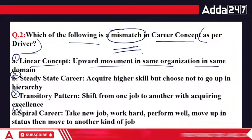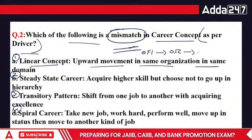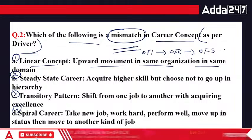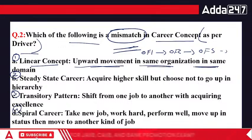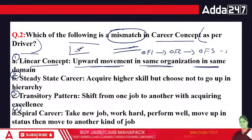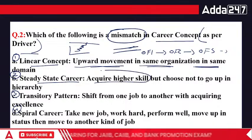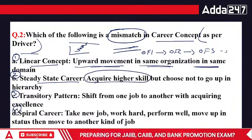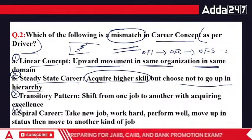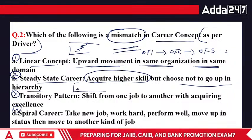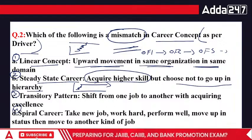For example, you joined a bank as a law officer at Scale 1, then got promoted to Scale 2 as a law officer within the same bank, then Scale 3, Scale 4 — that is linear career. Steady state career is where you have acquired higher scale and knowledge, but you have chosen not to go up in the hierarchy — there is stagnation.